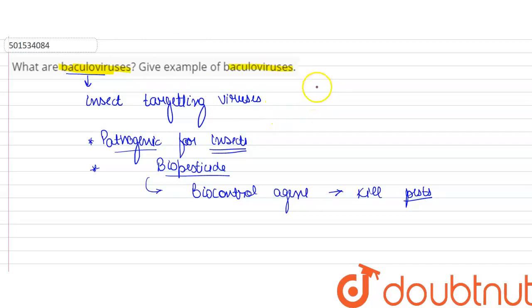So if we look at its example, the example is Baculovirus heliothis. Baculovirus heliothis, what does it attack? It attacks an insect called cotton bollworm. It provides protection to the cotton plant against this pest. I hope this clears your doubt. Thank you.